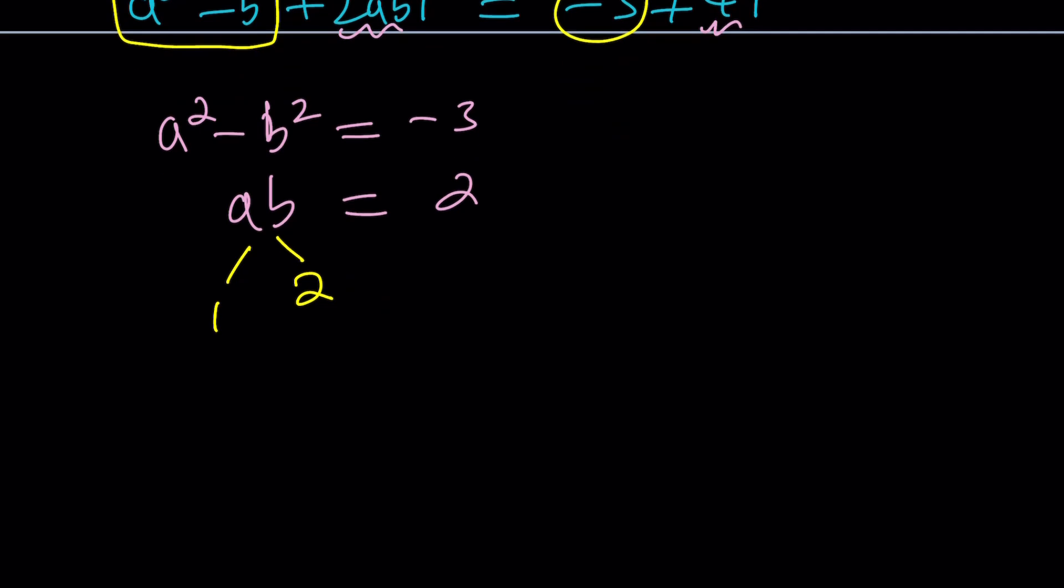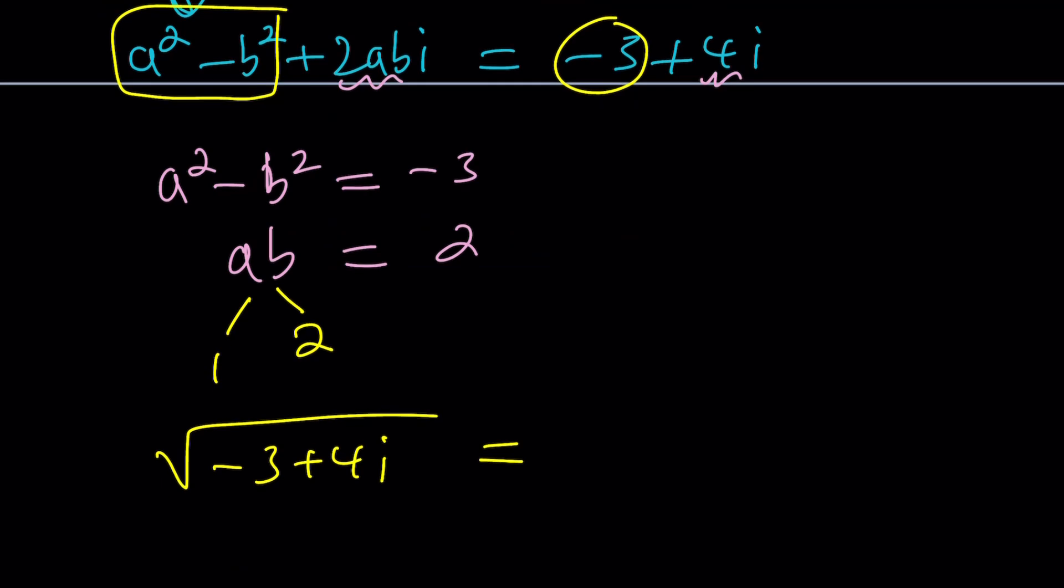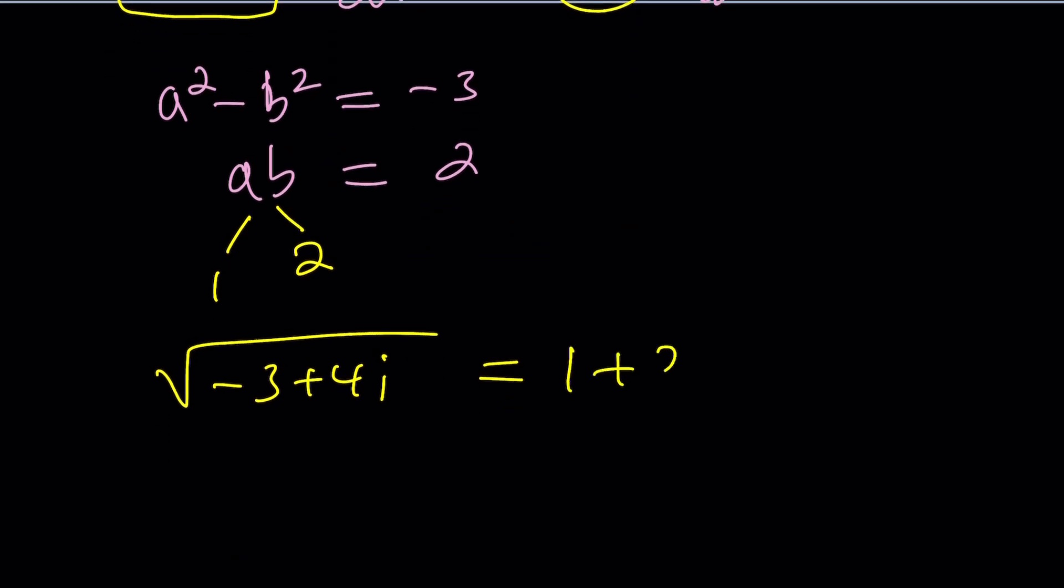Of course, this is just going to give us one of the solutions. But that's good enough. So, in other words, the square root of negative 3 plus 4I is going to be A plus BI, which is 1 plus 2I. Nice, right?